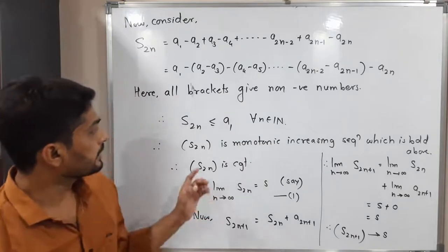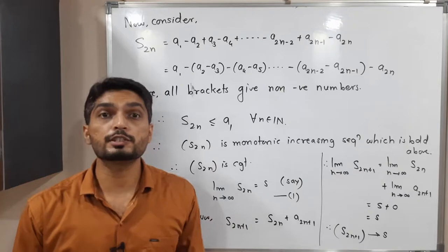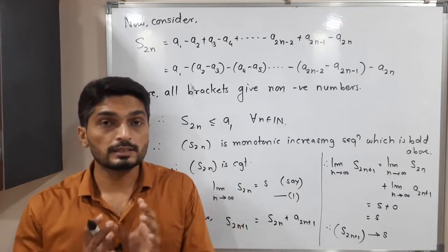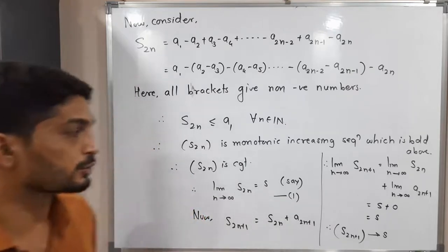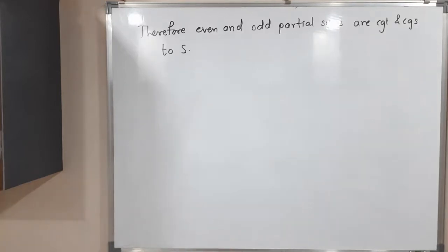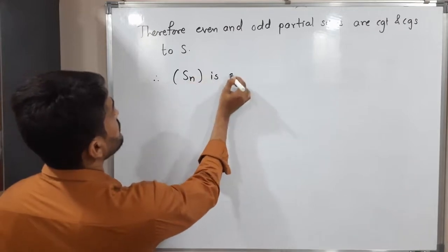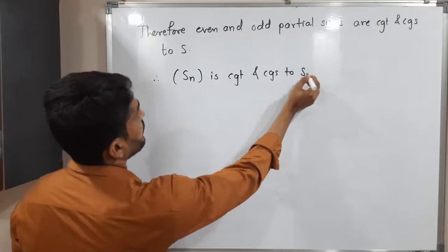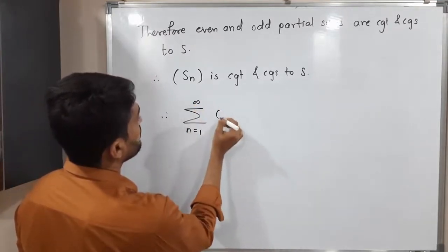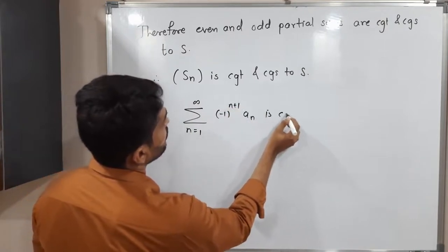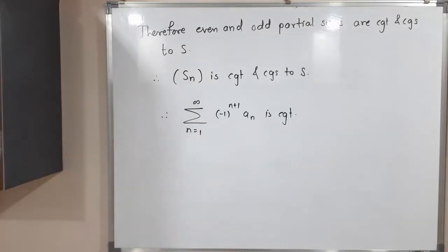So s2n converges to s and s(2n+1) also converges to s. That means both the even and odd partial sums converge to the same point s. Therefore the sequence of partial sums s_n is also convergent and converges to s. Since the sequence of partial sums is convergent, the corresponding series — summation from n=1 to infinity of (-1)^(n+1) * a_n — is convergent. This completes the proof of Leibniz theorem.